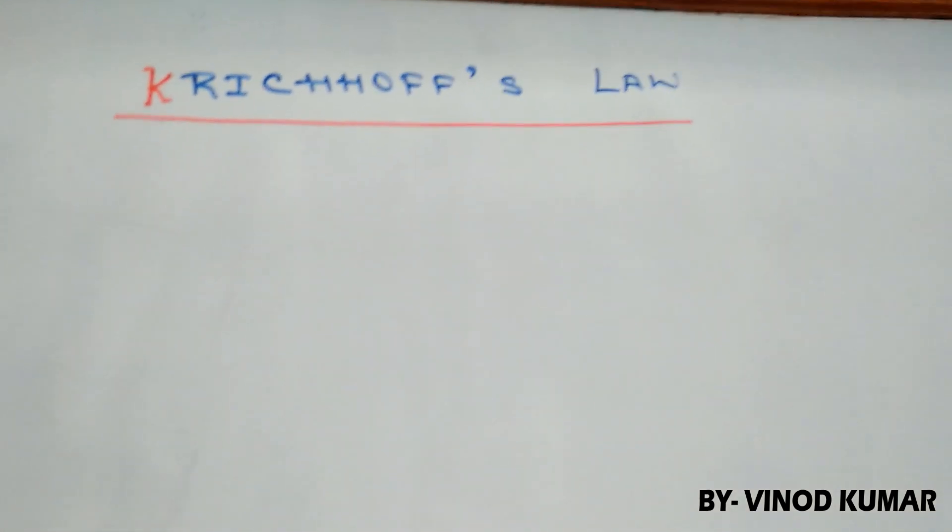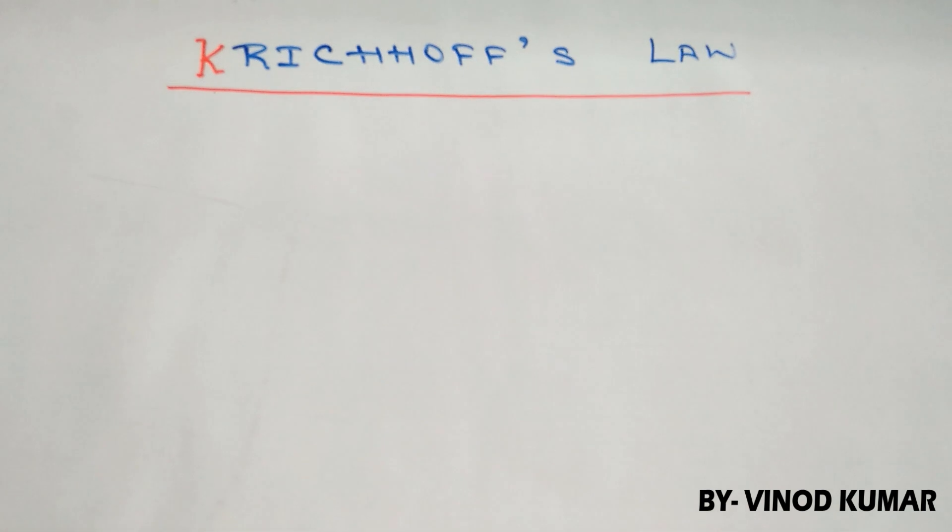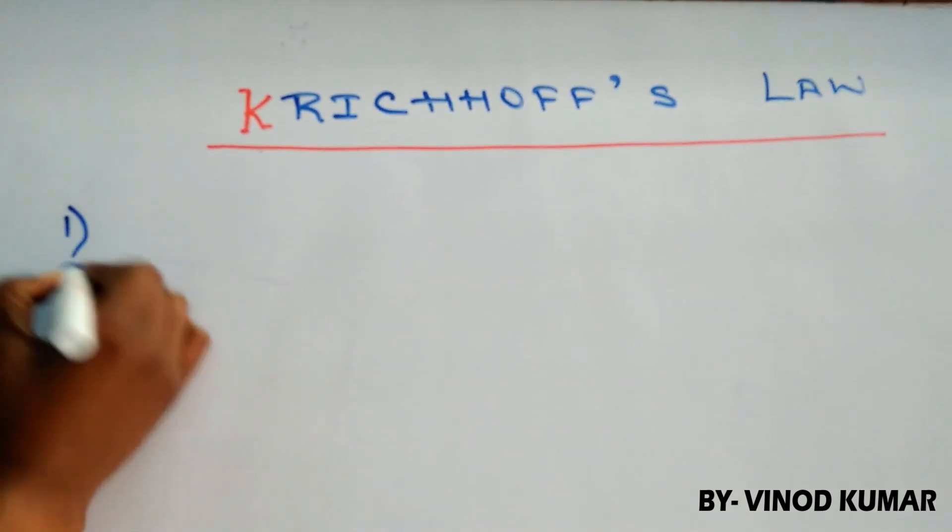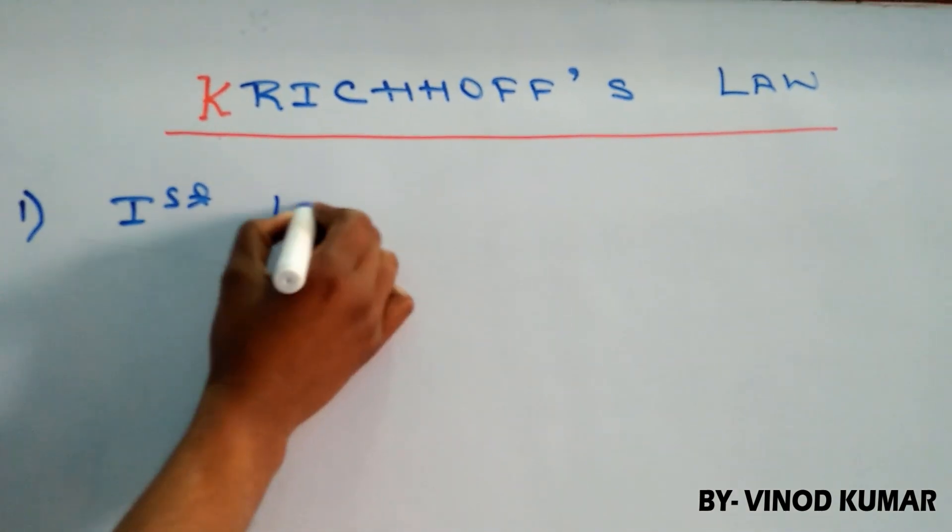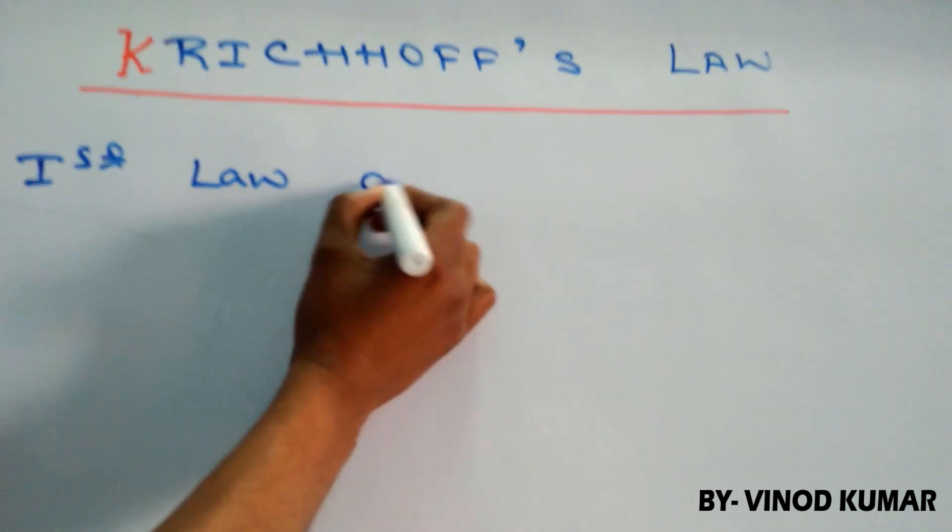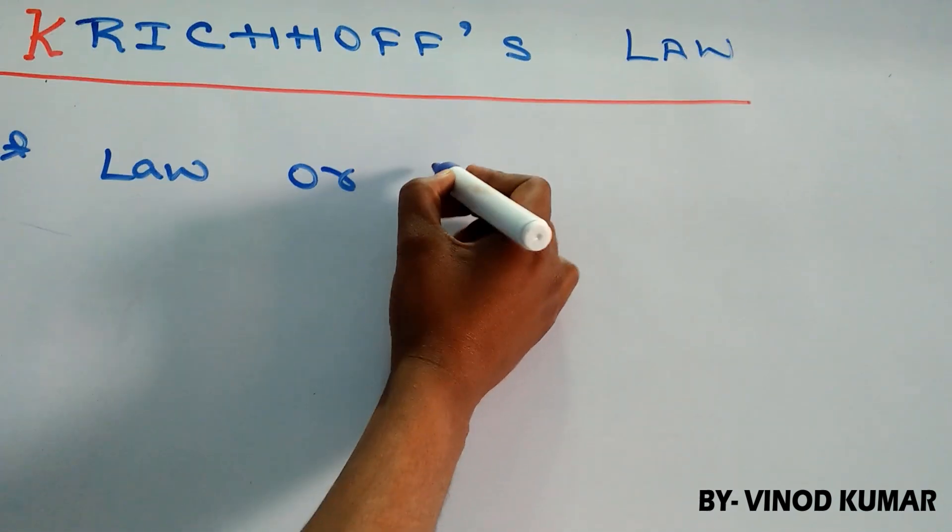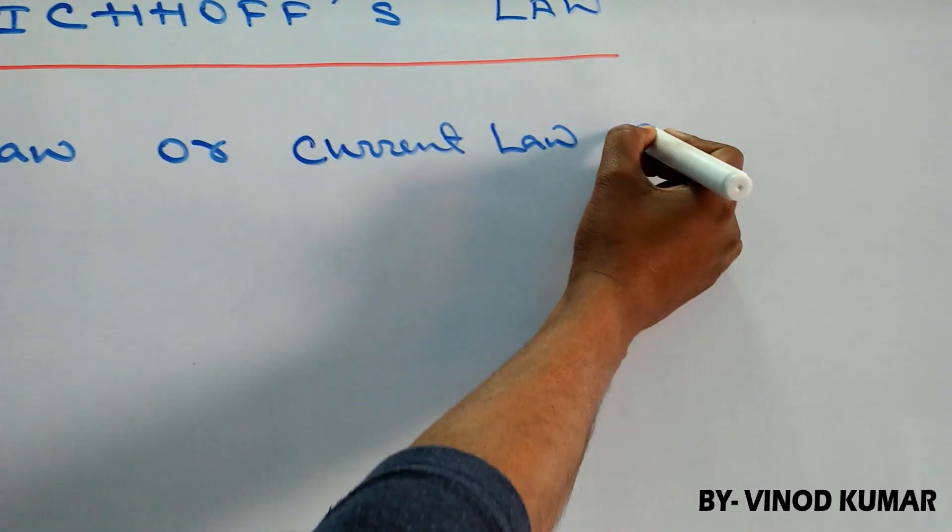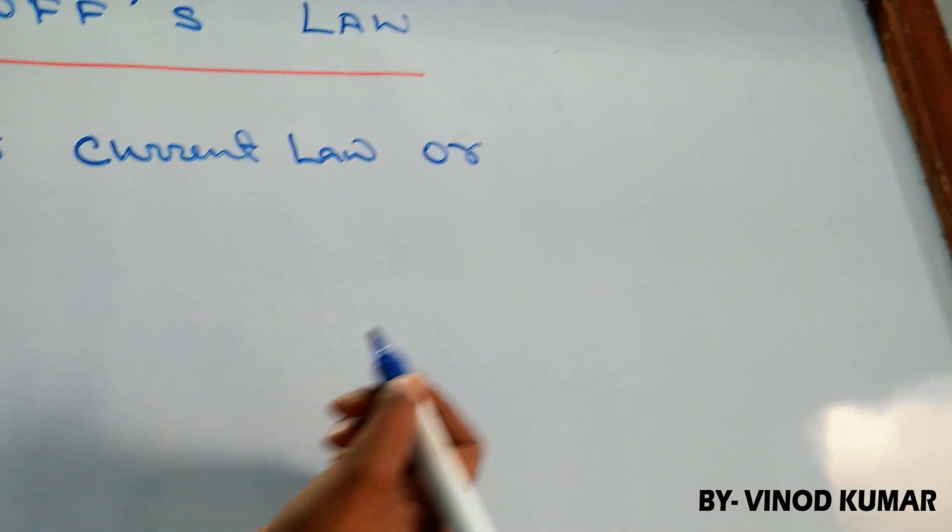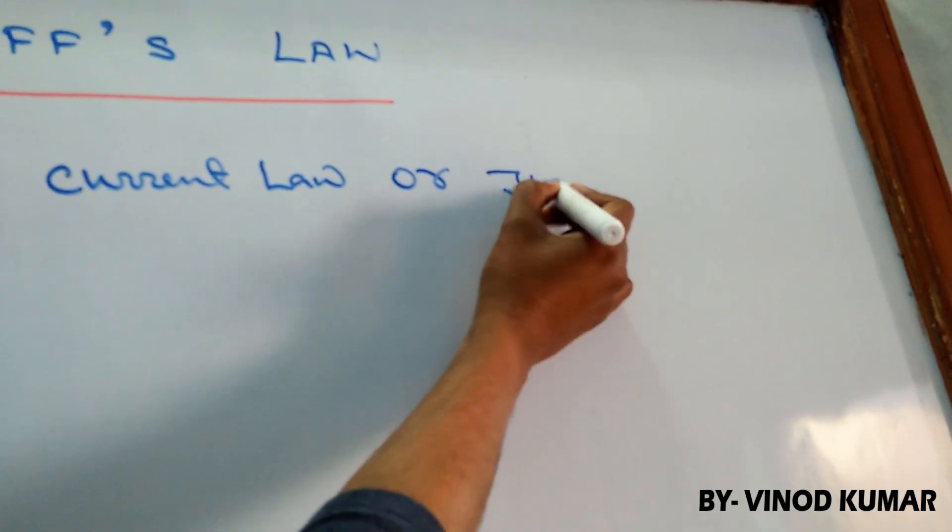Let us start, students. Kirchhoff's law. There are two laws in this. The first one is known as first law or it is also known as current law or it is also called junction law.